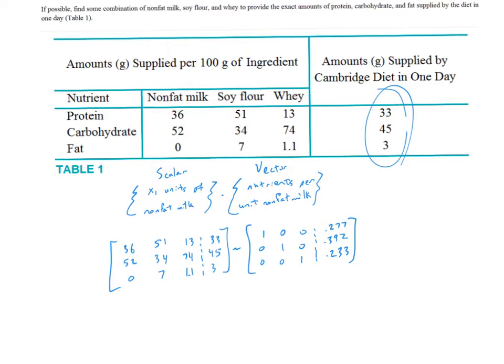Before moving on to the next example, one thing to think about: what is the significance of all positive solutions? It's significant that all those solutions are positive so that there is an actual physical possible solution. If you had a negative amount of whey, that wouldn't make sense. You couldn't construct that Cambridge diet. Because we have all positive solutions, we actually have a solution here.